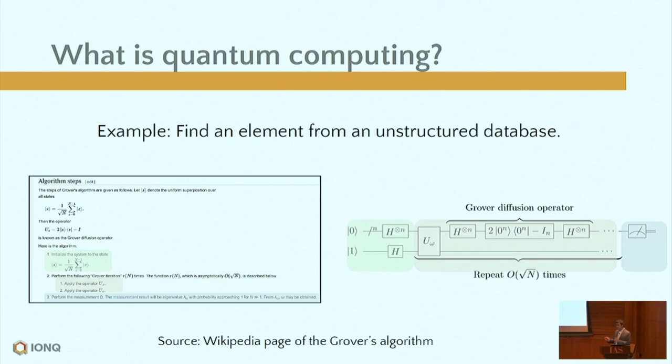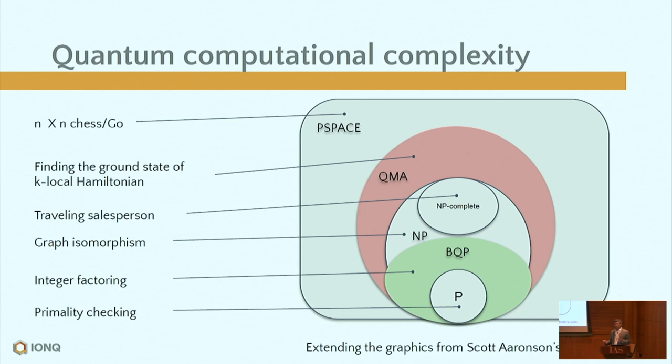For example, finding an element in an unstructured database can be written as a standard algorithm or equivalently as a quantum circuit — a graphical method. Research in quantum algorithms has given birth to a number of complexity classes. Two important ones are QMA (quantum Merlin-Arthur), the quantum analog of NP, and BQP (bounded quantum polynomial time), the quantum analog of P.